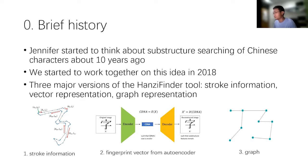There are three major versions. Each of them is probably depending on how we represent a Chinese character. In the first version, we represent a Chinese character as a sequence of stroke and use stroke information to do computation. In the second version, we use our encoder to encode a raster image into a fixed size vector, so-called fingerprint vector. And we use that vector for substructure searching. In the current version, we turn a character into a graph like you just see.